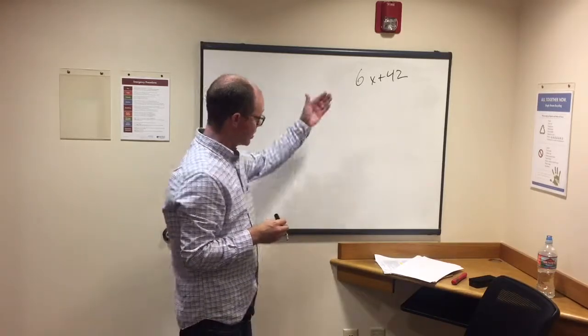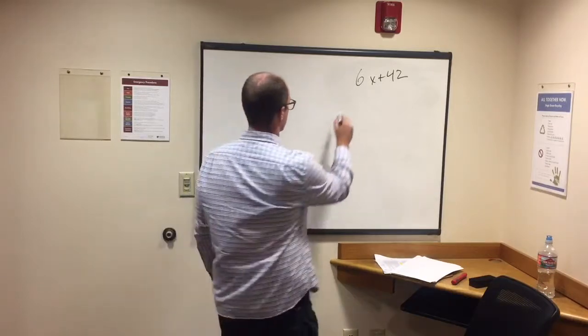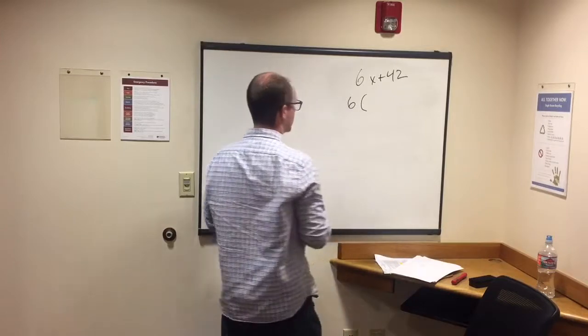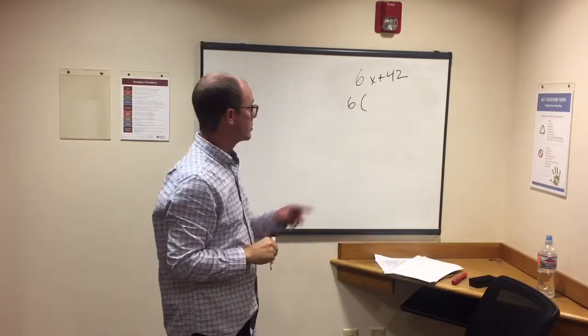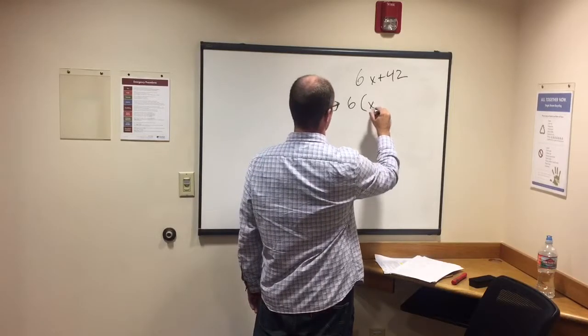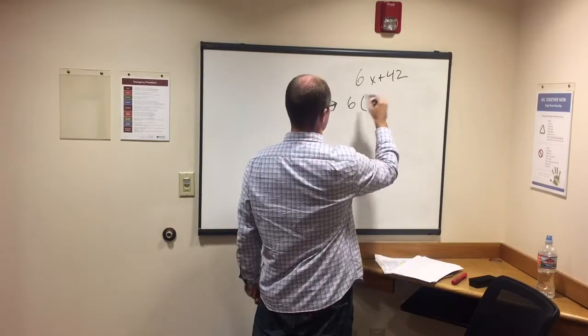We're going to multiply to get it to equal 6x plus 42. So we put x in here, plus 6 times 7 is 42.